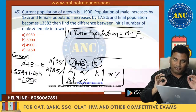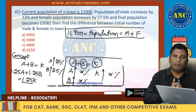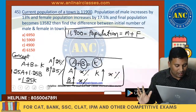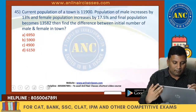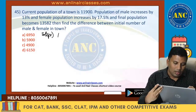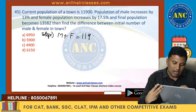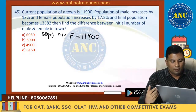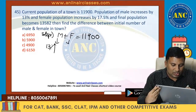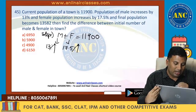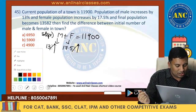Step number 1. Male plus females equals 11,900. Population of male increases by 13%. Population of female increases by 17.5%.